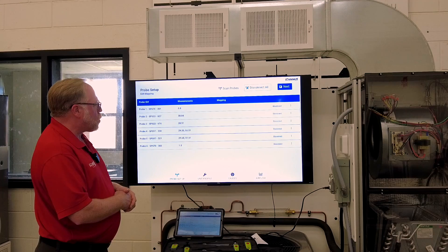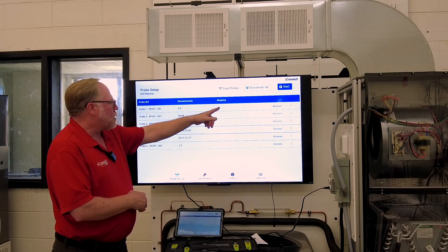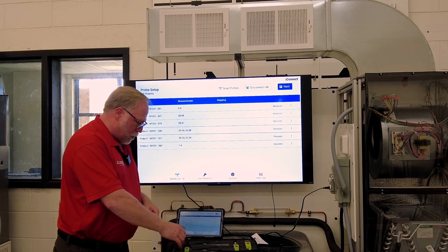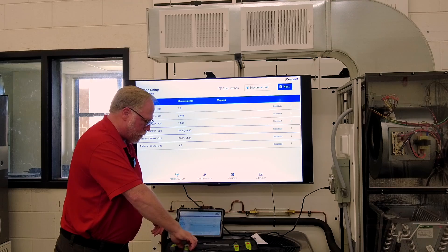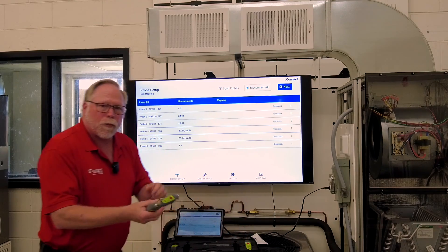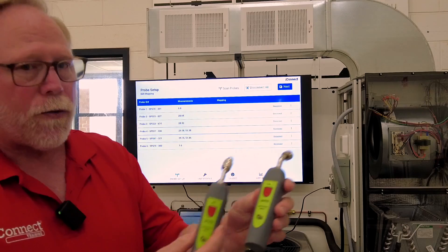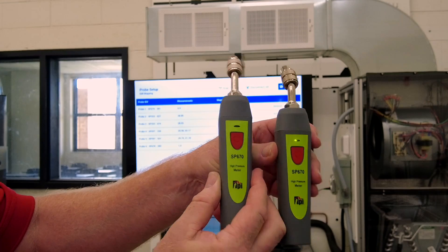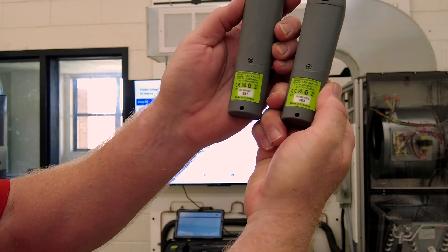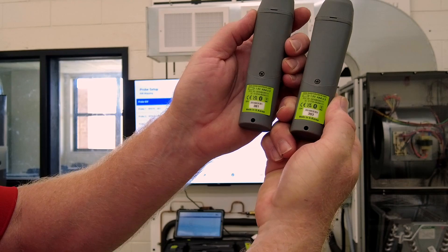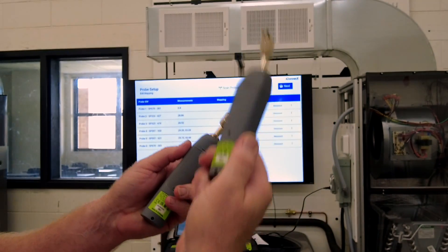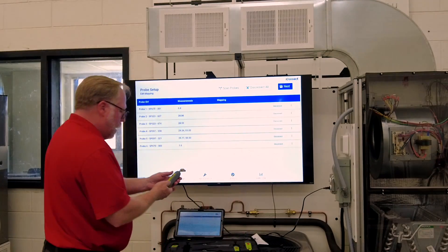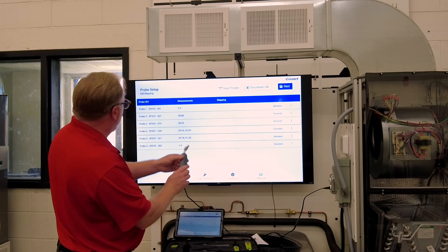The next thing we want to do is we want to map them to tell it which thing they are, high pressure, low pressure, supply air, return air, and so forth. Now when we do that, I want you to pay attention to something. You have duplicate probes here. So both of these are SP670 pressure probes, okay? But on the back, they have different serial numbers, a 381 and a 383. So we're going to tell the tablet which of these is high pressure and which of these is low pressure based off of that number.